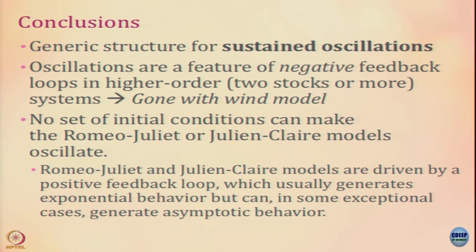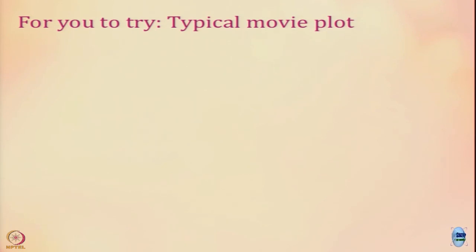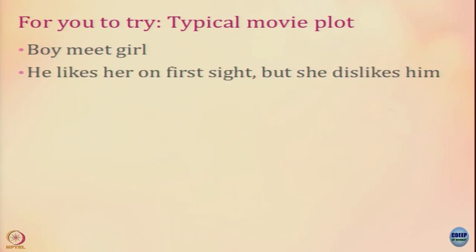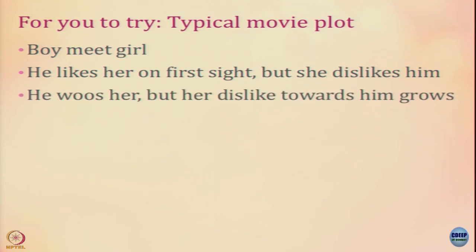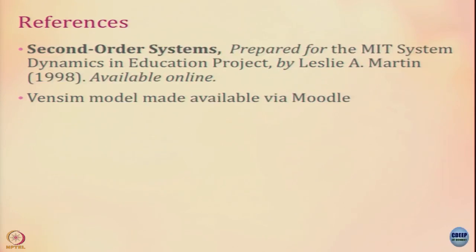There is a learning exercise from this class. Consider a typical movie plot line: boy meets girl, he likes her on first sight but she dislikes him. He woos her but her dislike towards him grows, then suddenly she starts to reciprocate his love. We cannot model this with a fixed parameter setting — there is a non-linear shift in feelings and reactions. Try to model this: what kind of stocks, is the reaction governed by the other's response or not? Some more descriptions are available online. Thank you.